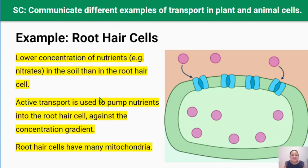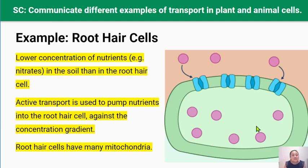Now let's look at real-life examples of active transport. First is the example of root hair cells. Root hair cells are special cells found on the roots of plants, and they use active transport to help plants take up minerals found in soil. Generally, these minerals are more concentrated inside the plant's roots than in the soil, so root hair cells have to actively move mineral ions into the cell against the concentration gradient using carrier proteins. To cope with all this active transport, root hair cells need a lot of energy from respiration, so they have a lot of mitochondria. If root hair cells can't carry out this active transport, the plant won't be able to survive.